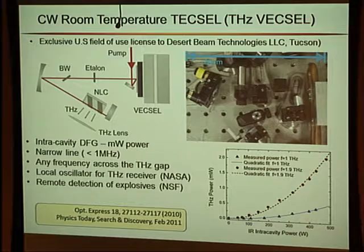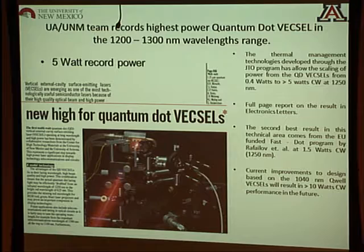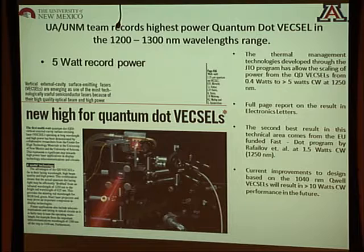You can replace quantum wells with quantum dots — done by the UNM group generating wavelengths in the 1200–1300 nm range with about 5 watts output from a single oscillator. Now let me talk about how we designed these chips. There are different levels of optimization. Before ever growing a wafer, we first need to optimize the quantum wells to emit maximally at the target wavelength.